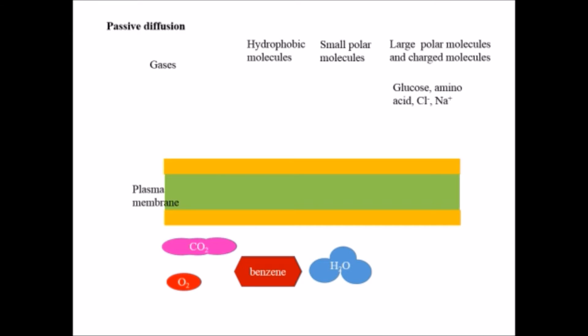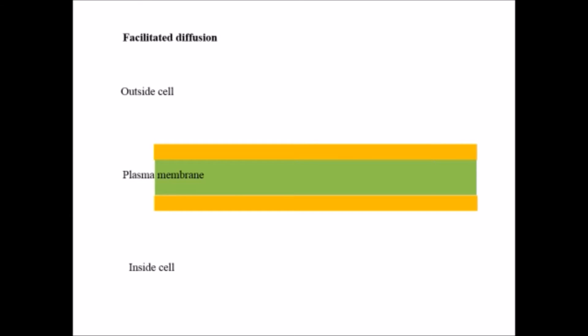...like glucose, amino acids, chlorine, and sodium ions cannot pass across the plasma membrane without assistance. They need some special energy for passage from the outer medium to the inner medium across the plasma membrane. This type of transportation which requires an external source is known as facilitated diffusion.